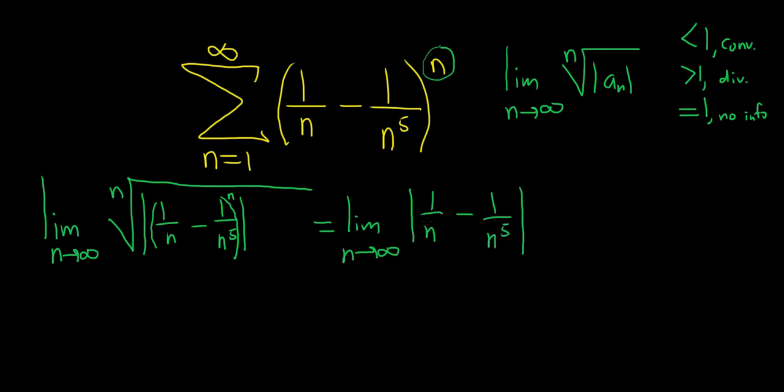Now, when n goes to infinity, these both approach zero. So we just get zero. So this is less than one. So we have convergence by the root test.